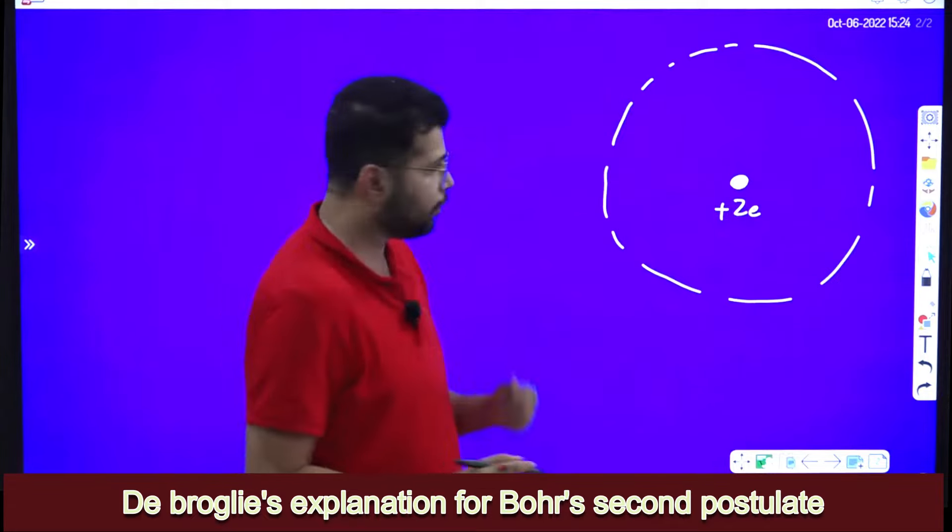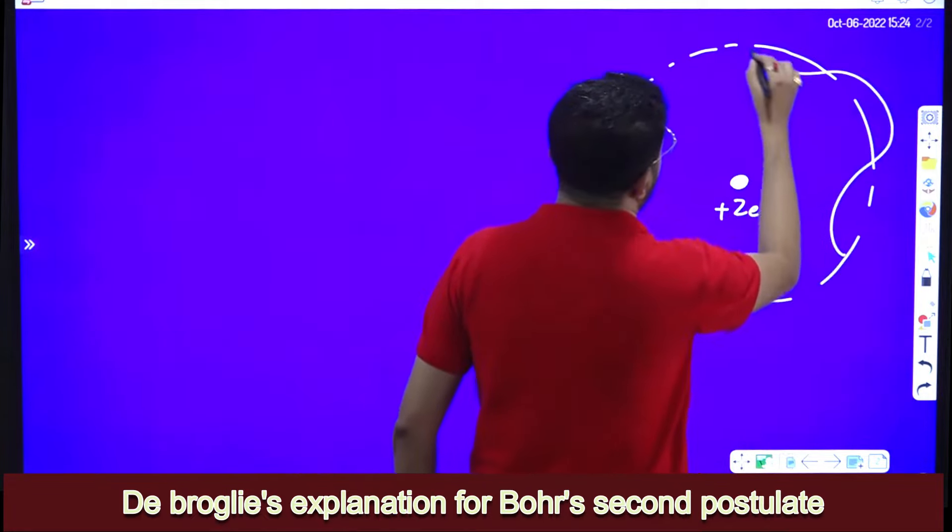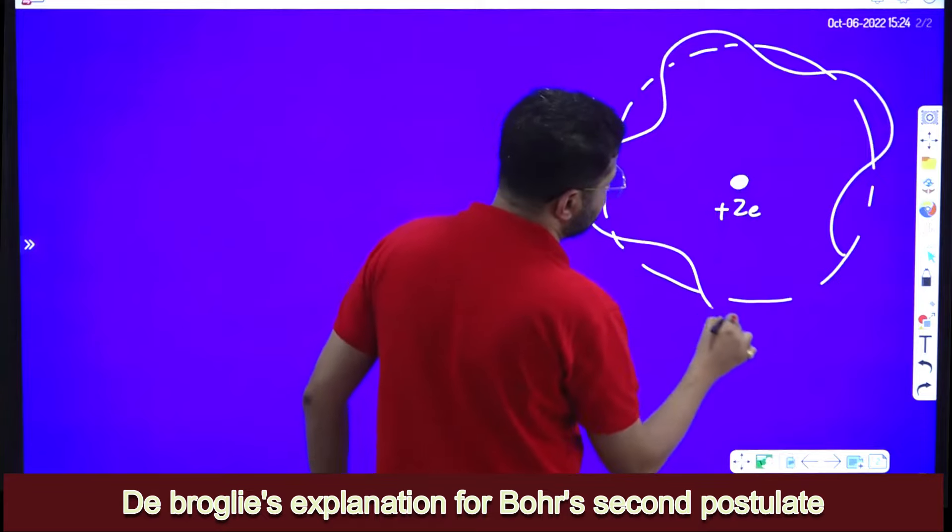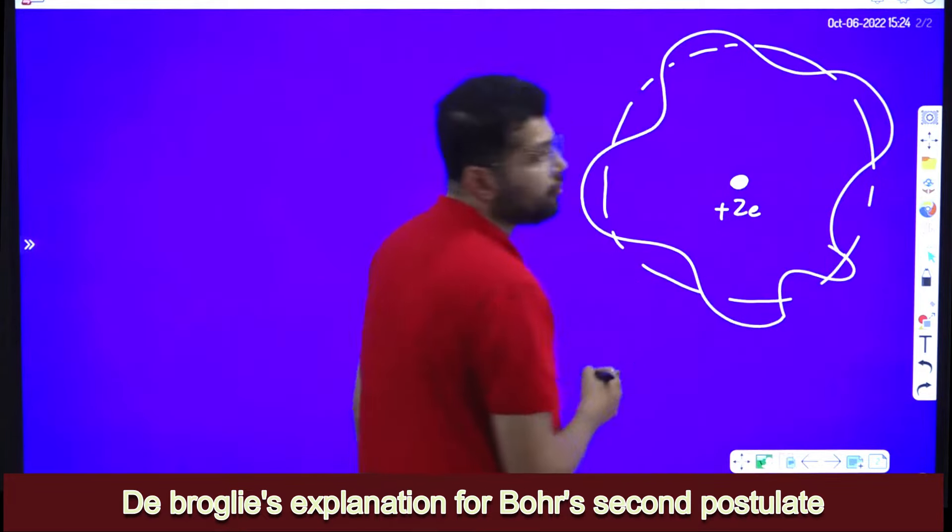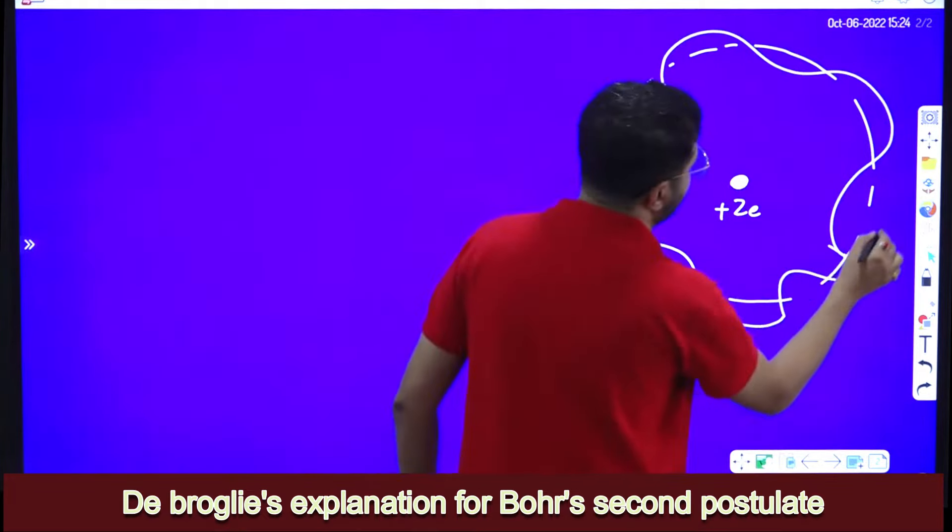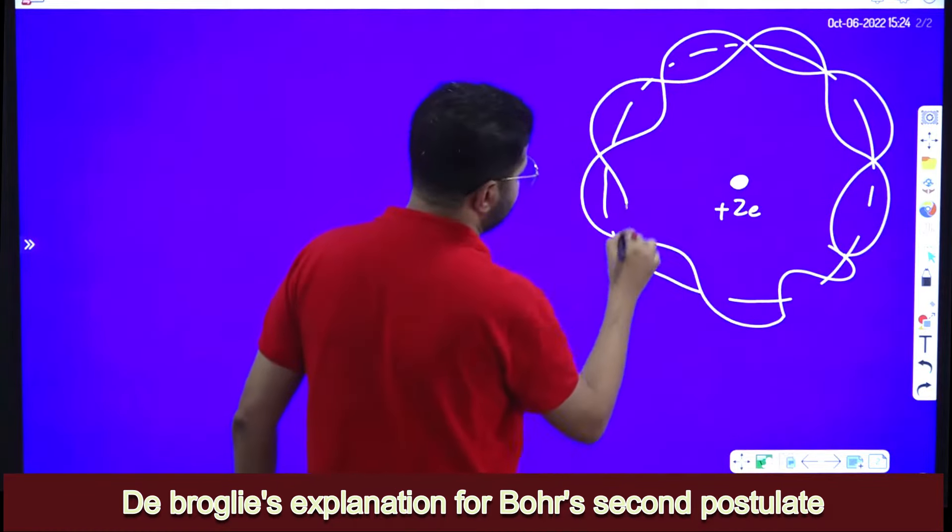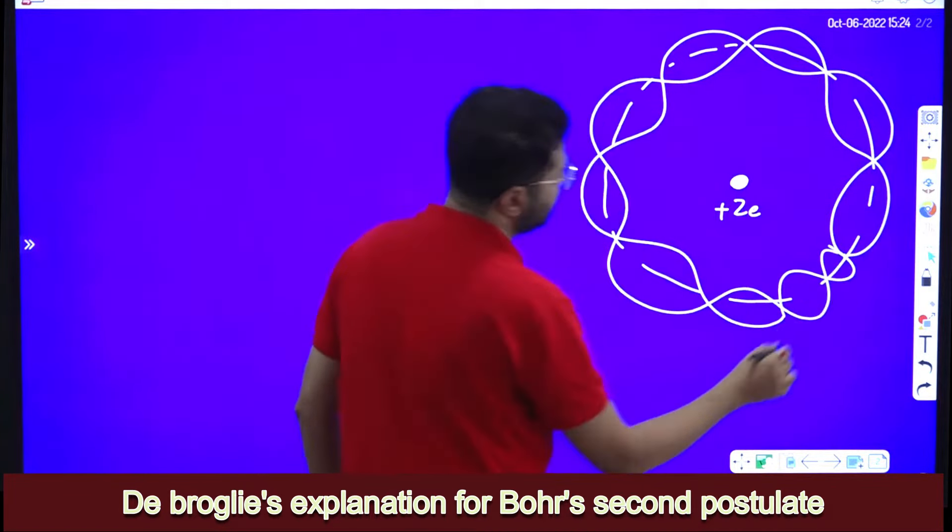But what Louis de Broglie tells is, instead, electron revolves like this forming a standing wave pattern, like this.